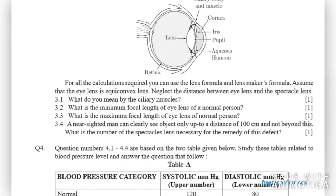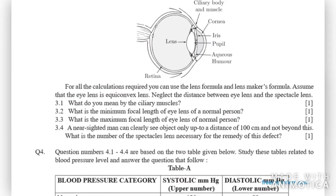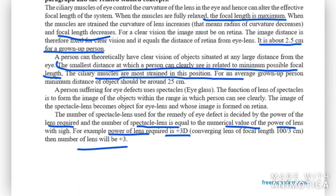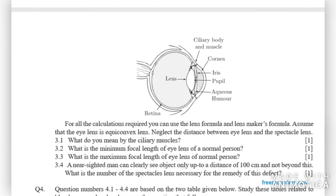Now we have to answer questions related to this paragraph. The first one: what do you mean by ciliary muscles? In the first line of this paragraph, we have the answer. The muscles which are used to change the focal length of eye lens by changing radii of curvature. If we change the radii of curvature, then the ciliary muscles adjust themselves according to the need.